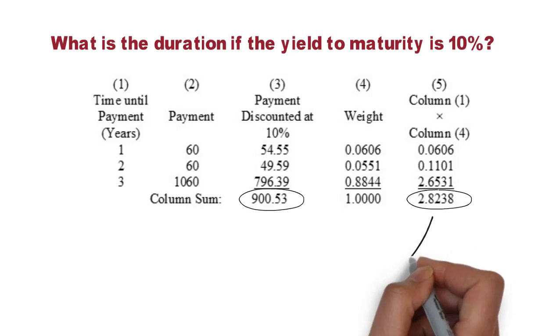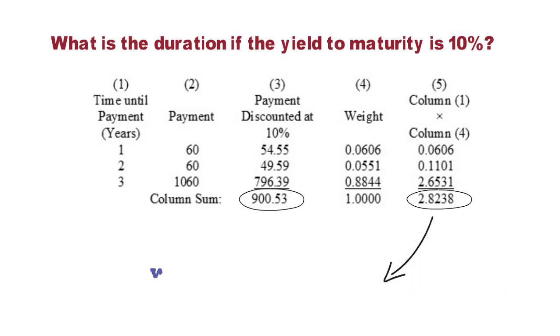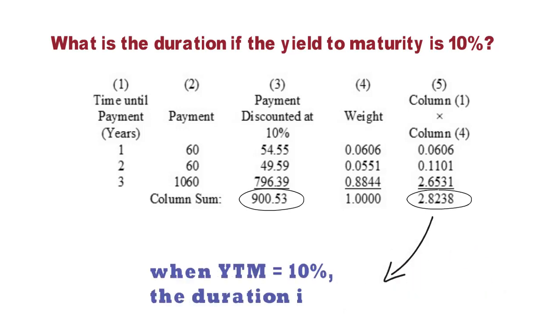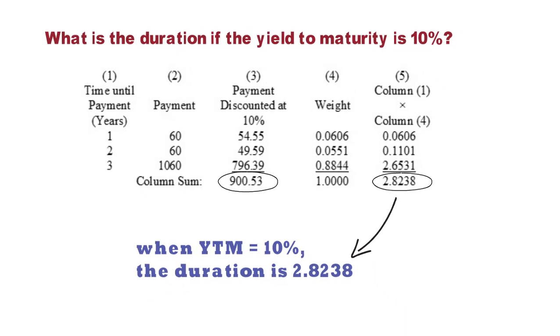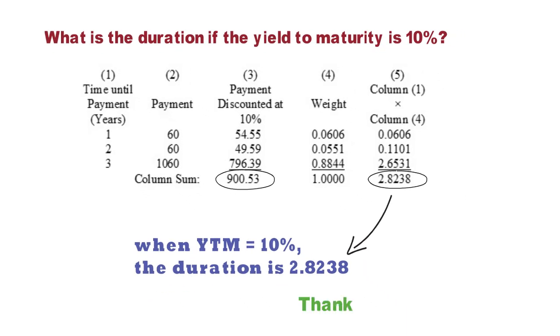Hence, when YTM equals 10%, the duration is 2.8238. In summary, when the yield to maturity increases, the duration decreases.